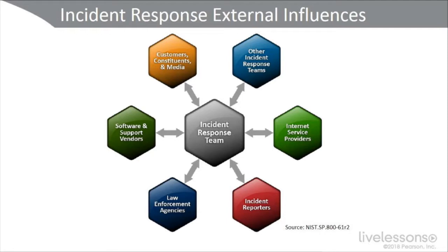Other external influences include vendors. Do we have a good relationship with our vendors so we can quickly patch, fix, and update our vulnerable systems? In the event of an entire outage or disaster recovery, are we able to get hot spares from our vendors? Do they have the inventory needed to replace parts or things damaged in a disaster? And then other influences would be customers, constituents, and dealing with the media.